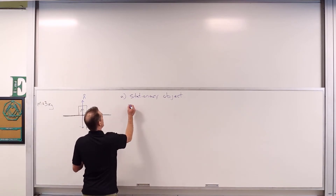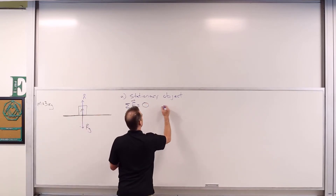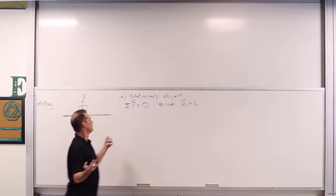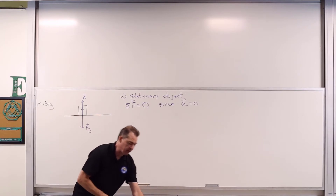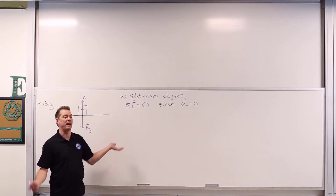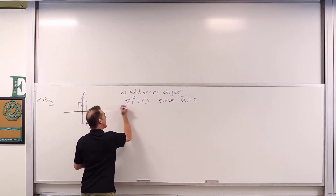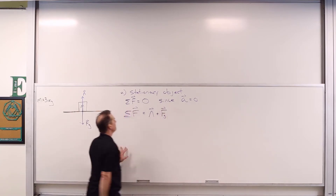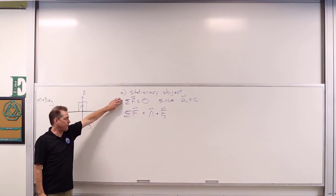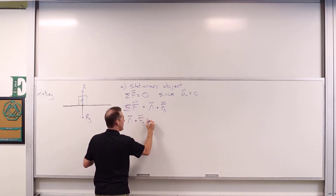For a stationary object, the net force acting on the object must be equal to zero, since acceleration is equal to zero. The net force produces the acceleration of the mass, which in this case is zero. The net force is composed of the sum of all forces acting — sigma F hat is equal to N hat plus F sub G hat. So N hat plus F sub G hat must be equal to zero.